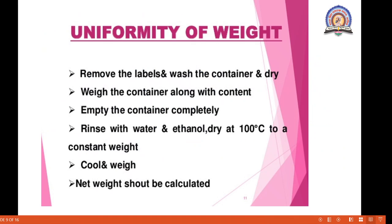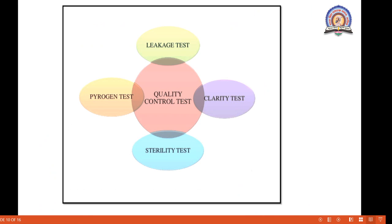What is the uniformity of weight for injection? Remove the label, wash the container, and dry it. Weigh the container along with the contents. Then empty the container completely, rinse with water and ethanol, and dry at 100°C to a constant weight. Cool and weigh. The net weight is then calculated — this is the uniformity of weight procedure.